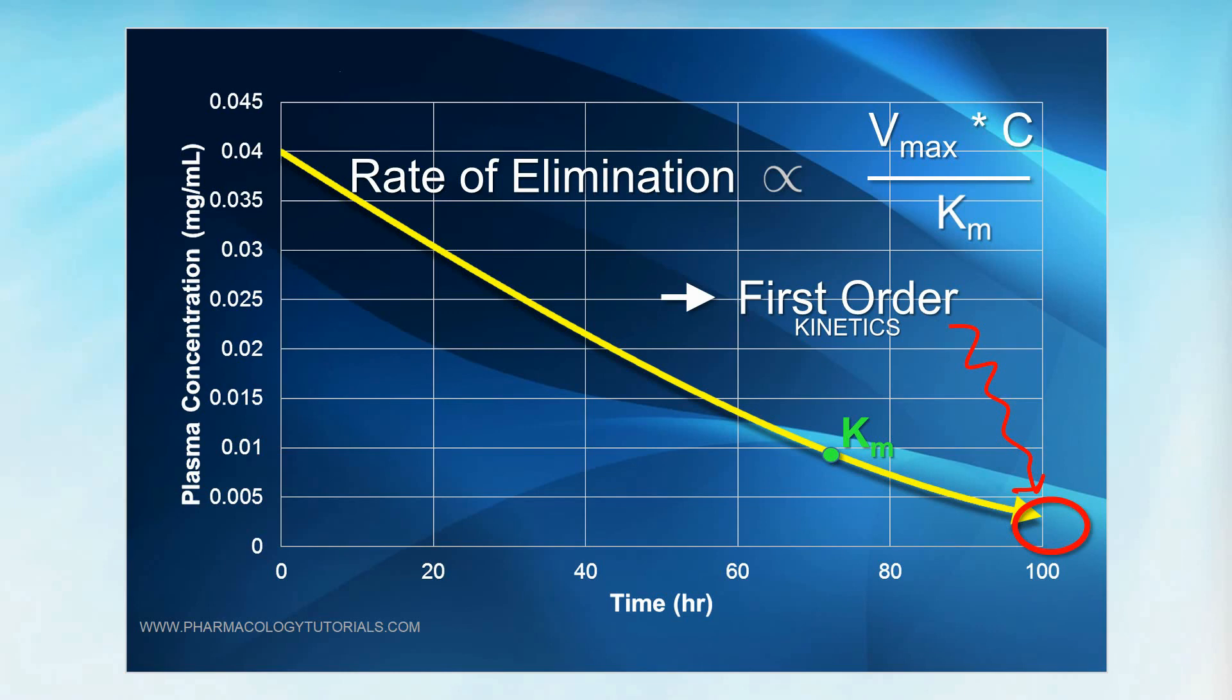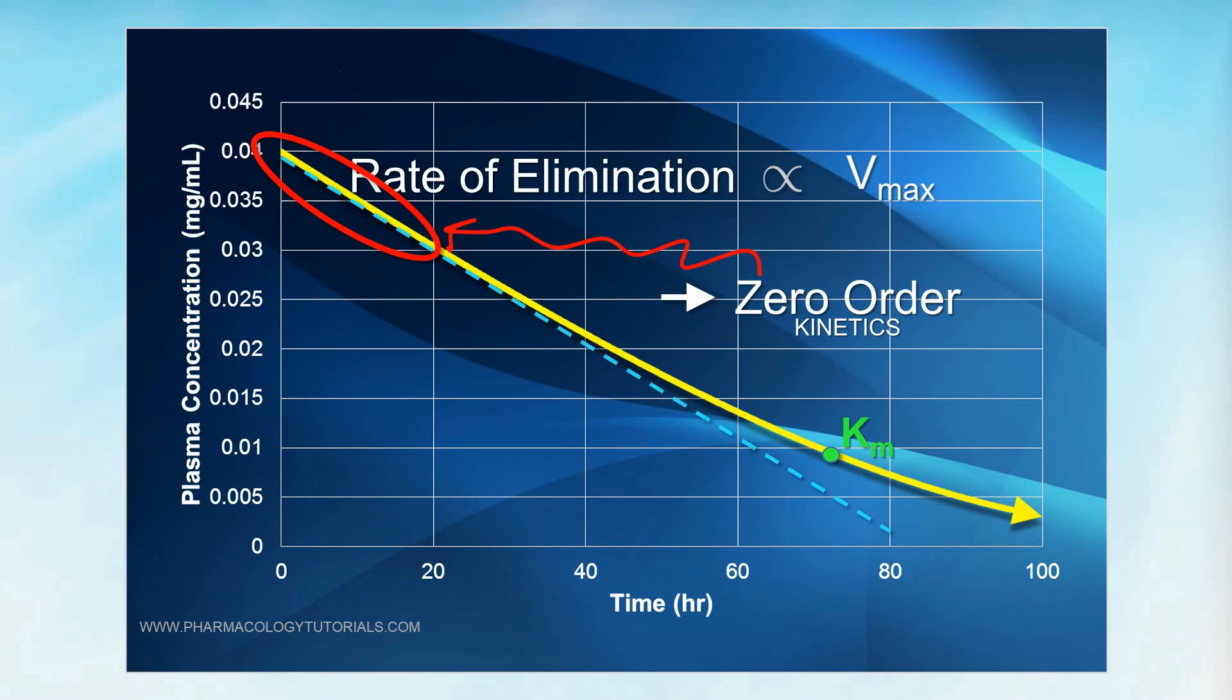By contrast, if concentrations are much higher compared to Km, the concentration term may be eliminated from the equation. Here, it approximates a zero-order model. You can see this best at the extreme top-left of the plot, where the elimination profile approximates a straight line. Now, this straight line actually represents the Vmax of the rate of elimination. You can see that the true zero-order occurs only at the extreme upper end of the plot.